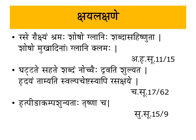Now, Rasa Kshaya Lakshana — manifestations of decreased Ras Dhatu. Decrease in Ras Dhatu is manifested by: Ruksham (dryness of skin, hair, nails, etc.), Shrama (exertional fatigue), Shosha (dryness of mouth), Glani (intolerance of speech — Shabda Asahnuta), and Hritpida (pain in the region of the heart). These are described as: 'Rasa Ruksham Shrama Shosha Glani Shabda Asahnuta Shosha Mukhadi Naam Glani Klamah.'